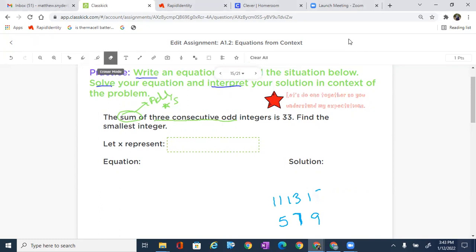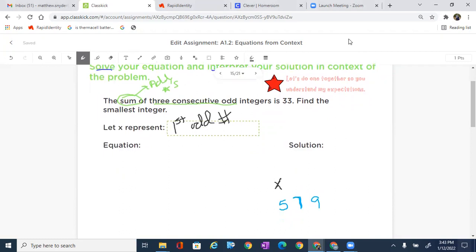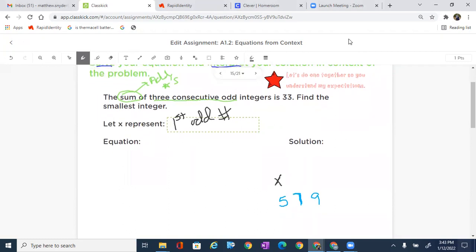Now, the one thing they need to do is they need to add to 33. So I look at five, seven, and nine. And what I'm gonna do is I'm going to represent the first number as the variable. So X represents the first odd number. And then what I'm gonna do is I'm gonna say, okay, well, if X represents the first odd number, let's make a relationship of how these odd numbers work.